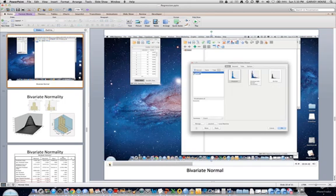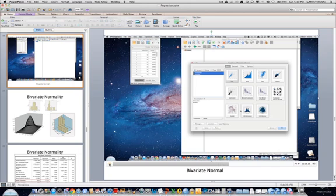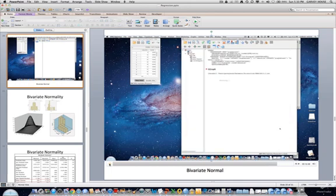Notice when I highlight just one variable as opposed to two variables, different choices appear. We're going to select the 3D histogram, and it generates a plot that looks like this.